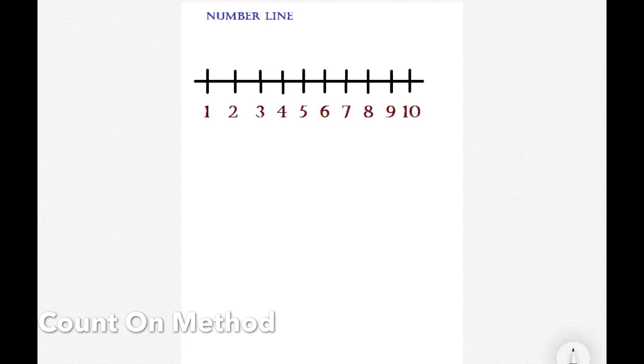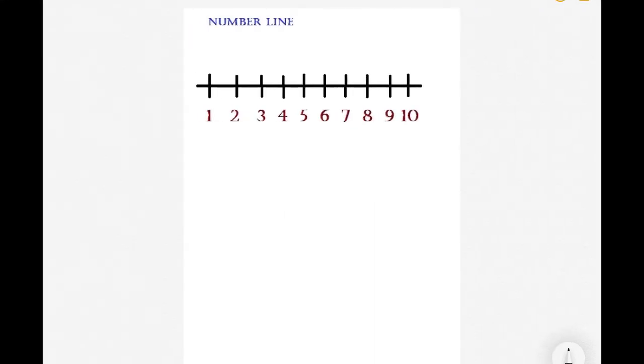The term counting on means you state your first term and then begin after that number. So if we have 7 plus 3, 7 is our first term, and we count on from there.